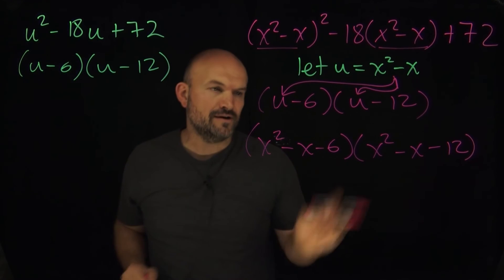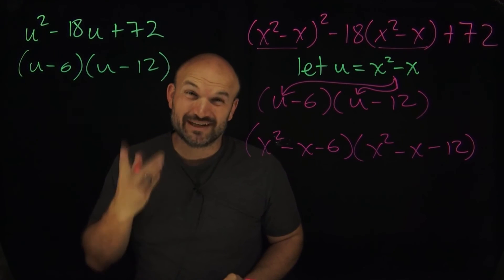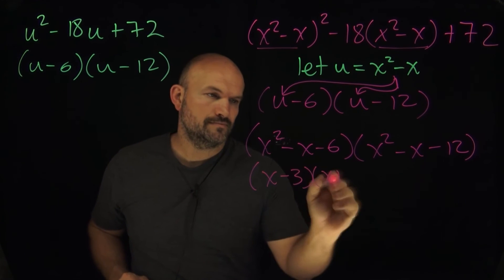So now we just got to do the same process that we did over here. What two numbers multiply to give me negative 6 and add to give me negative 1? That means the difference here is gonna be 1. I'm thinking 3 and 2, and therefore it'd be negative 3 and positive 2.